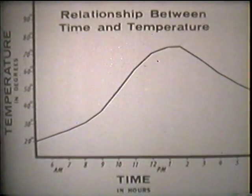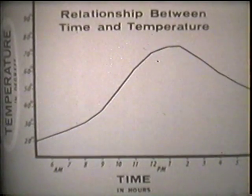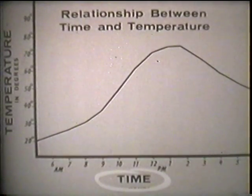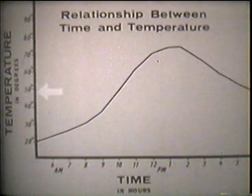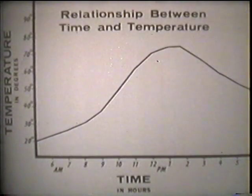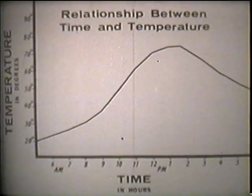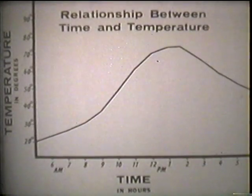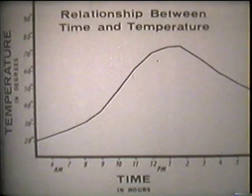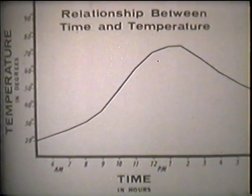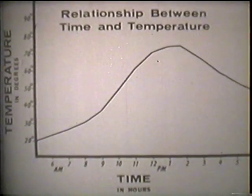Let's start with this statistical line graph. It shows temperature at different times of the day. In this graph, temperature is a changing quantity, and time is also a changing quantity. Since these two quantities vary, they are called variables. The relationship between the two variables is shown by the graph, and this type of graph is useful to us in algebra to show relationships between variables.